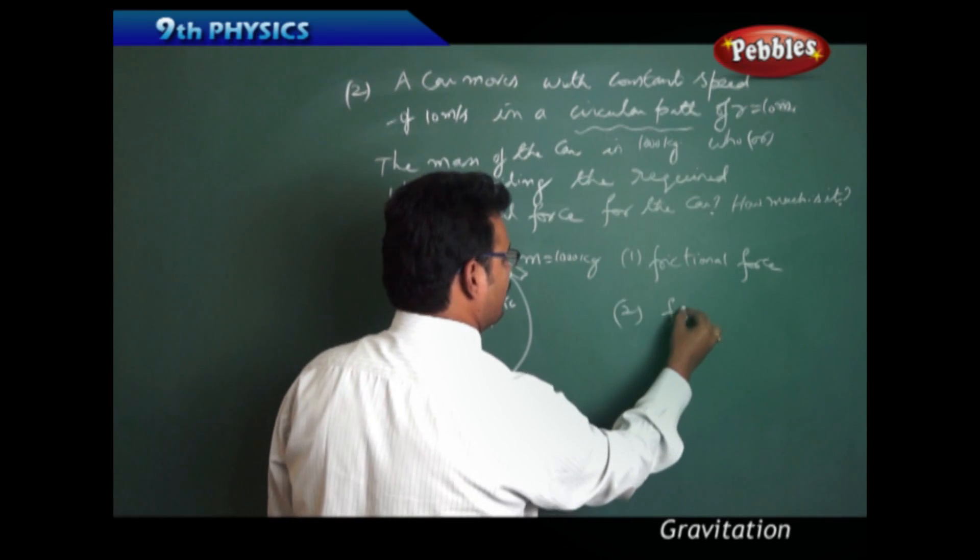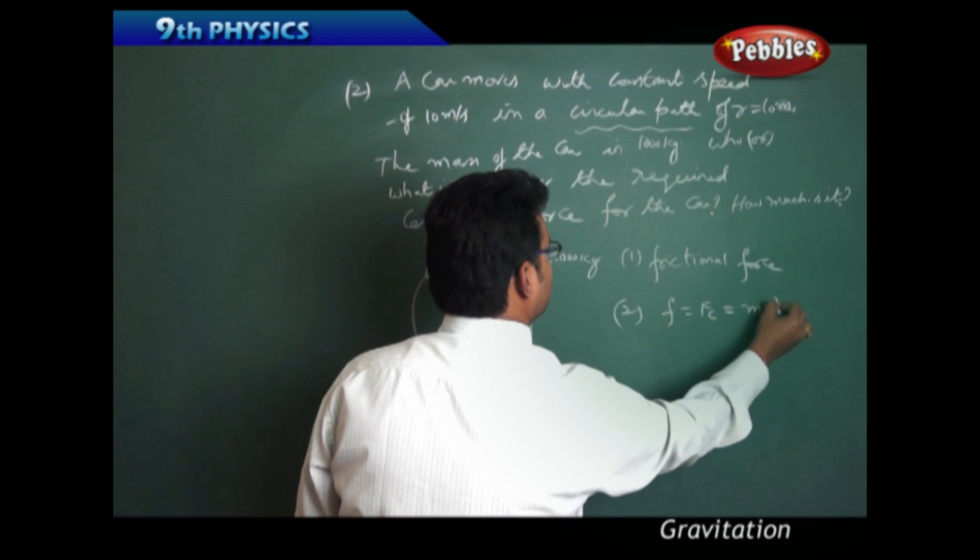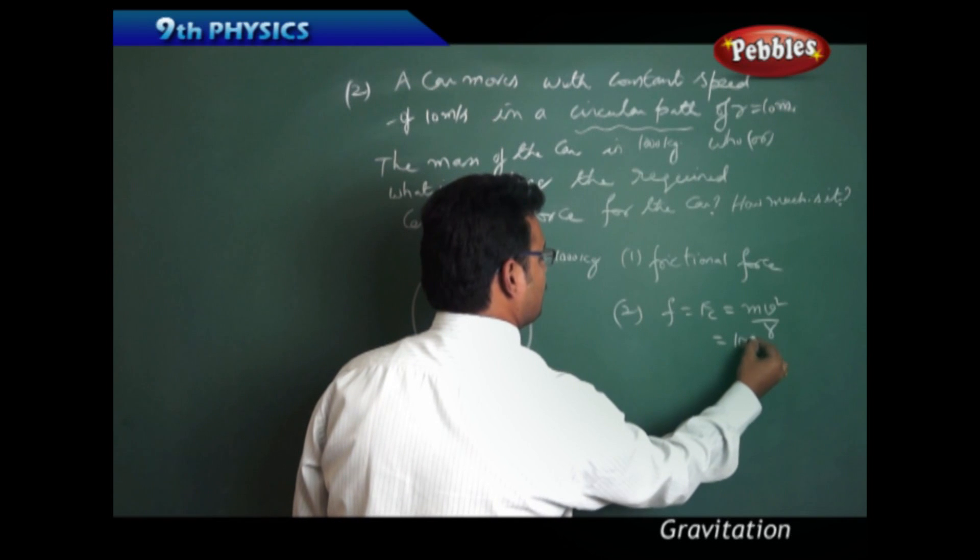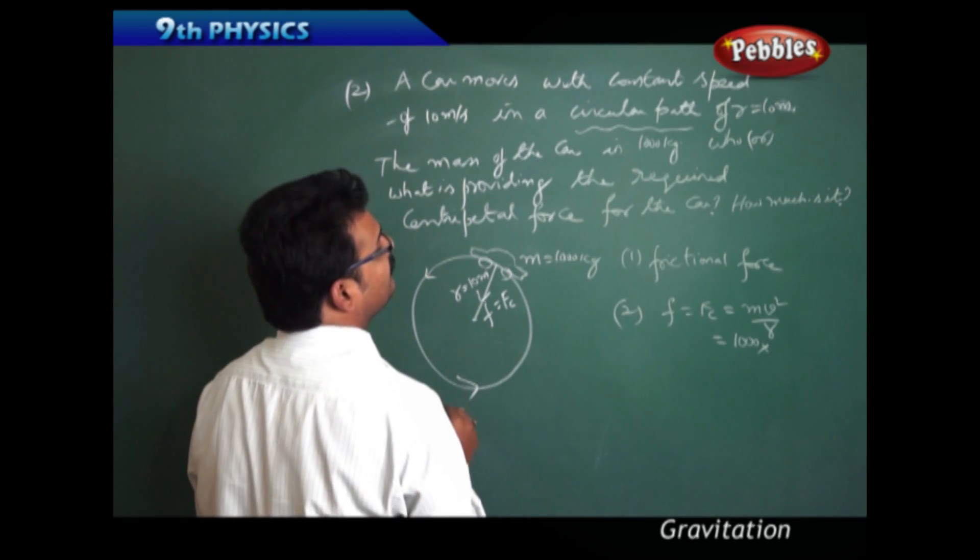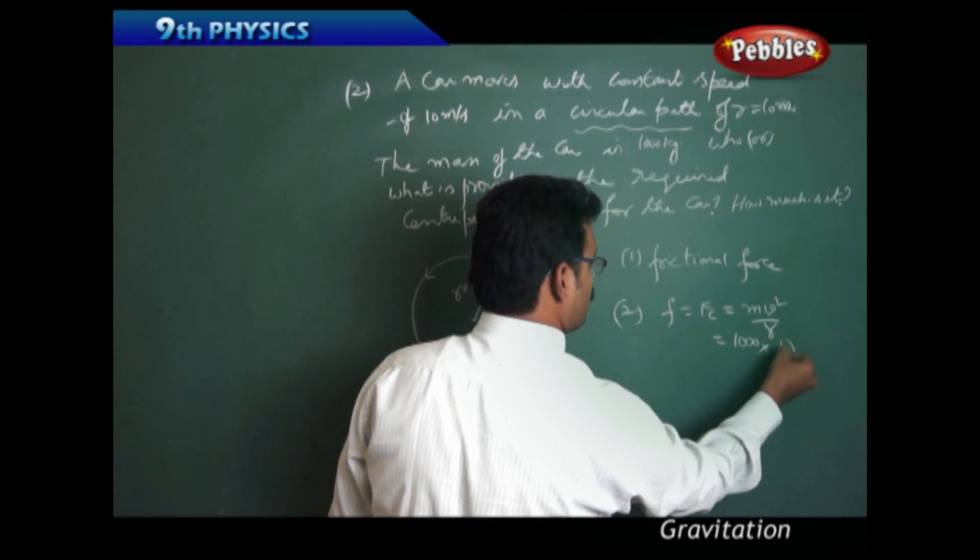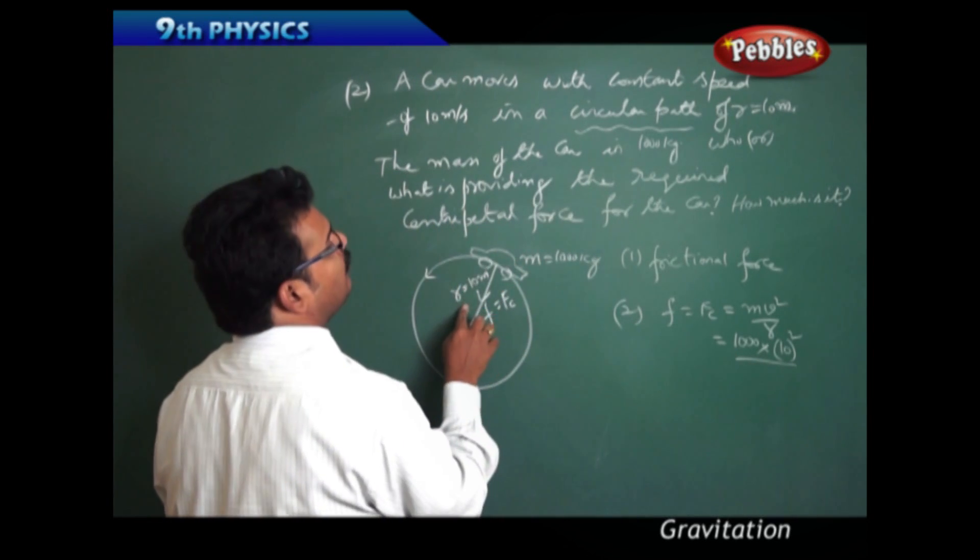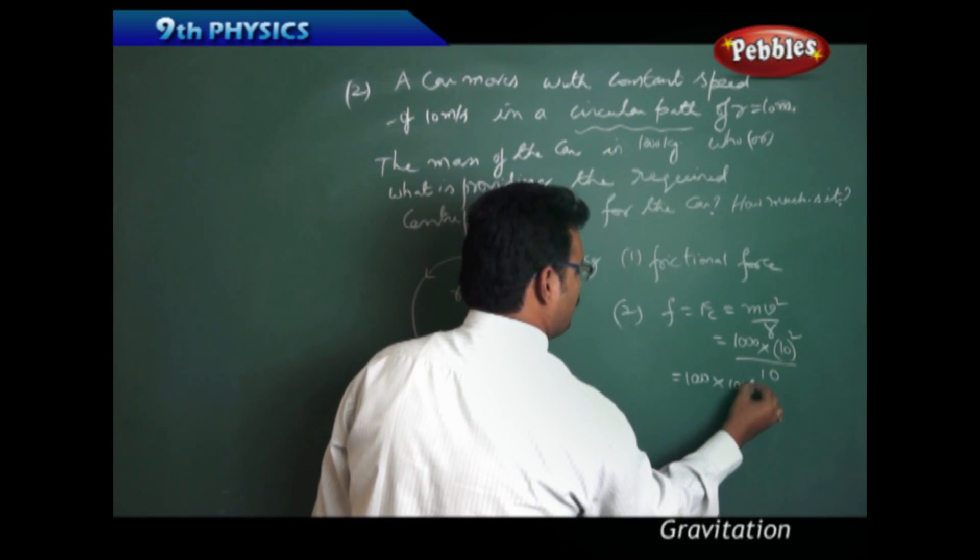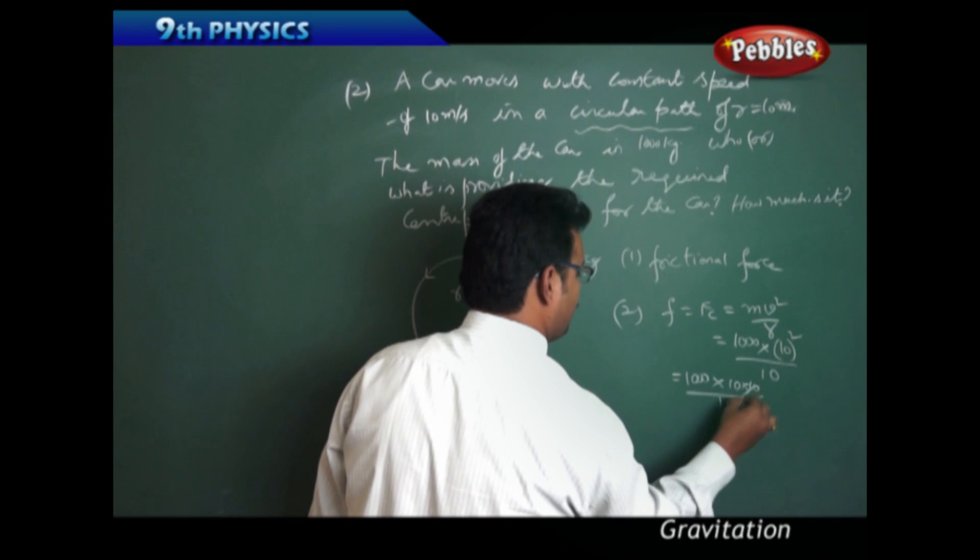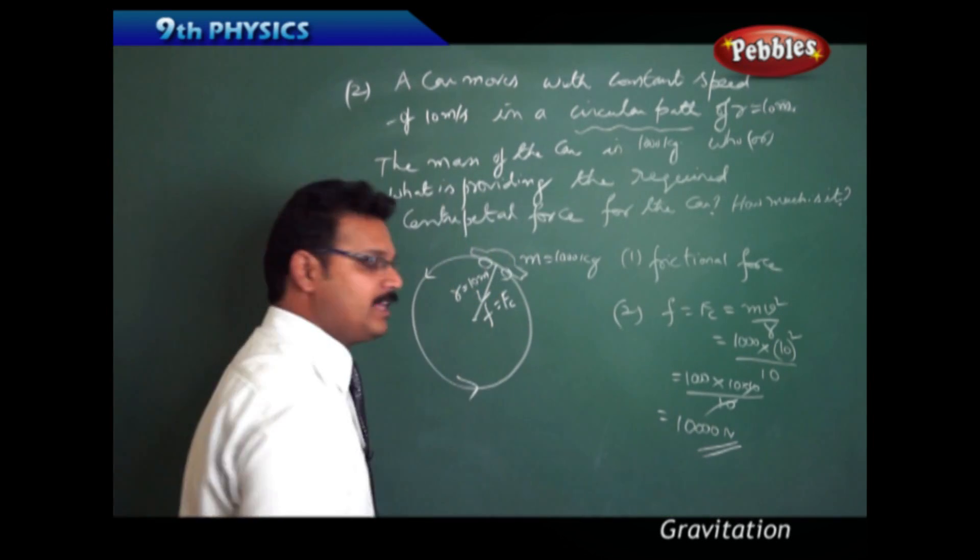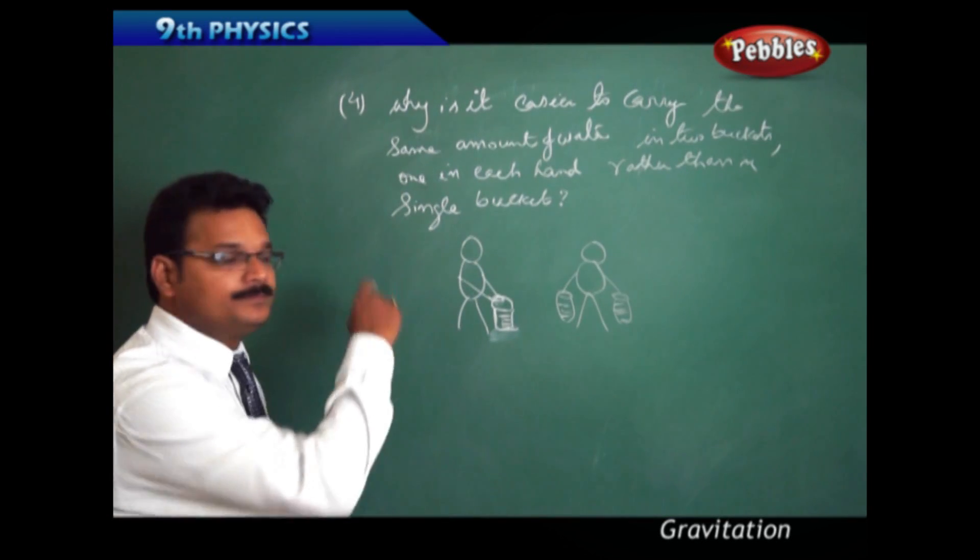Second part: how much is it? Frictional force is centripetal force and its formula is mv² by r. Mass is 1000 kg, velocity is 10 meters per second, radius is 10 meters. So it equals 1000 times 10 times 10 by 10. The 10 cancels, so the answer is 10,000 Newtons.